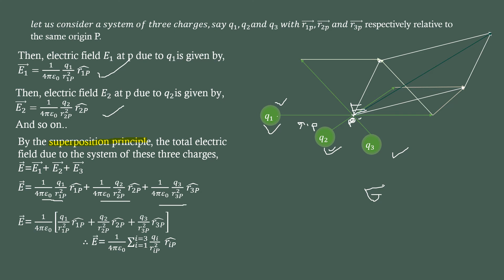This is the common factor. If you get the same factor, 1 by 4 pi epsilon naught in the first one, 1 by 4 pi epsilon naught in the second one, 1 by 4 pi epsilon naught in the third one. Take the common factor out, and the remaining will be q1 by r1 square, q2 by r2 square, q3 by r3 square.